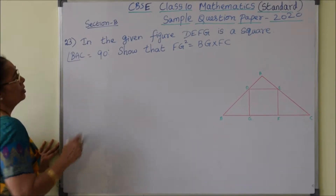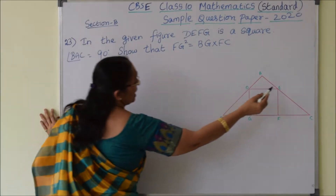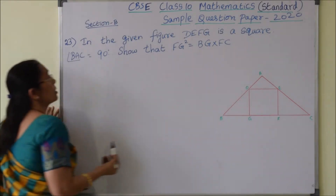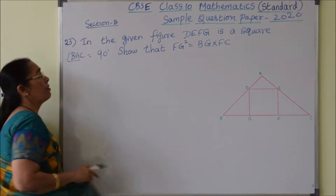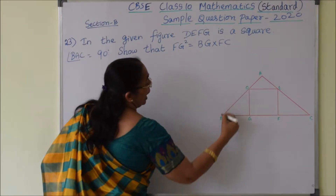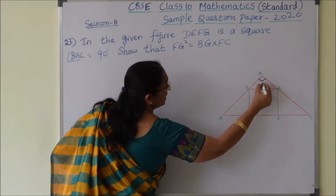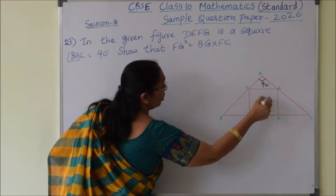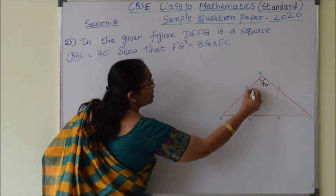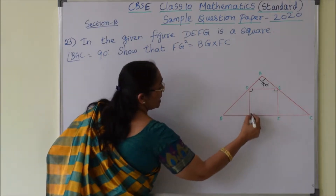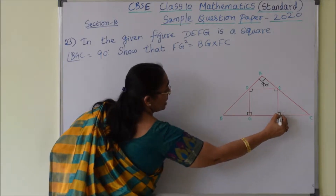Question number 23. In the given figure, DEFG is a square and angle BAC is equal to 90 degrees. Since angle BAC is 90 degrees and all angles in a square are 90 degrees, we can identify that this angle is 90, this one is 90, and again these two are also 90 degrees.